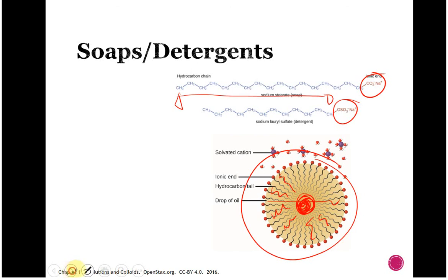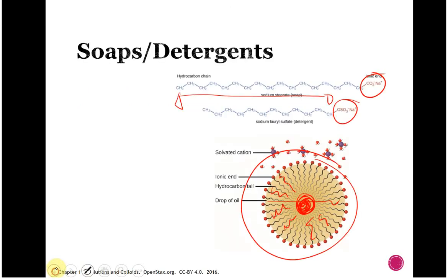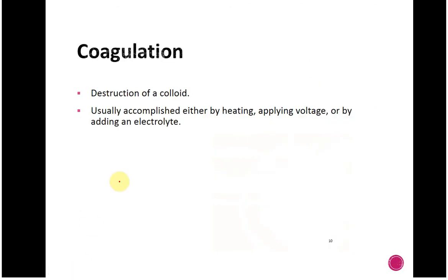So, applications of solutions and colloids are pretty widespread, actually. So, you can destroy a colloid. We said that they're unstable. They will separate by flocculation, creaming or coalescence. You can force the issue by either heating them, applying a voltage, adding a salt. You can speed up the process that way.